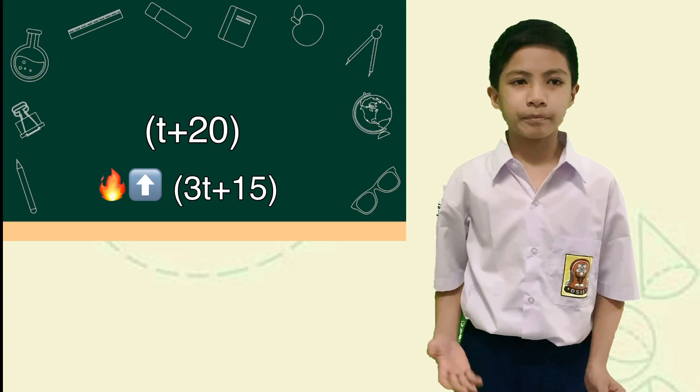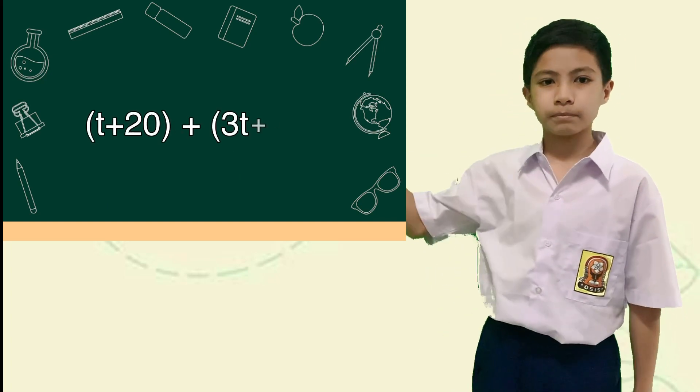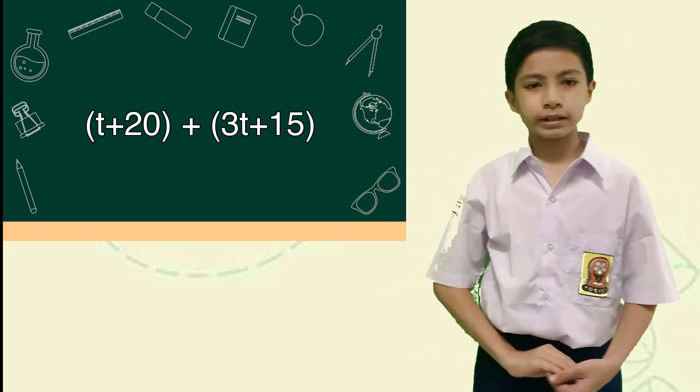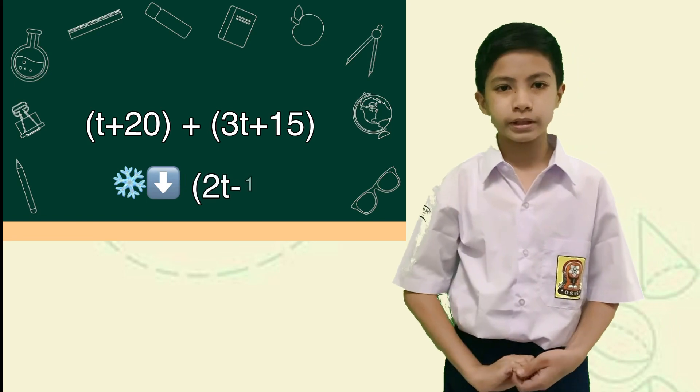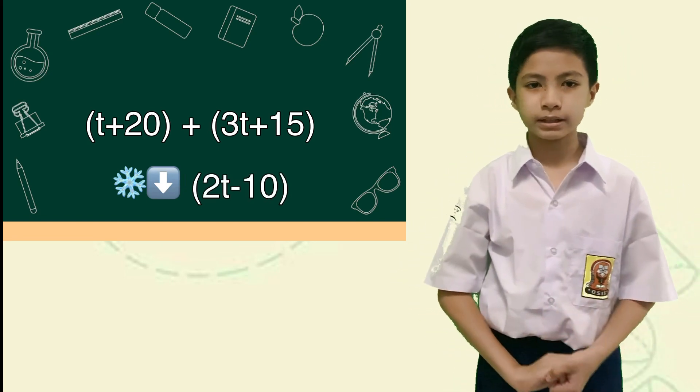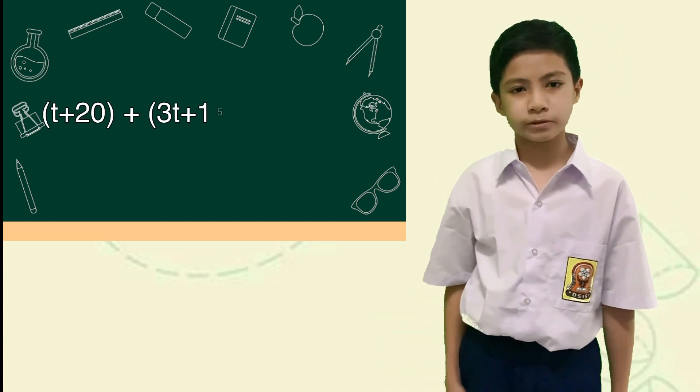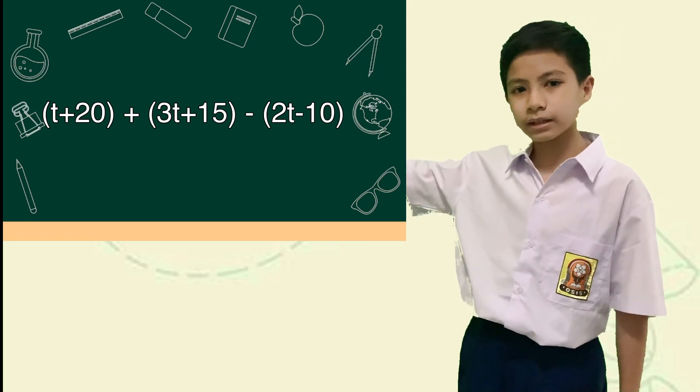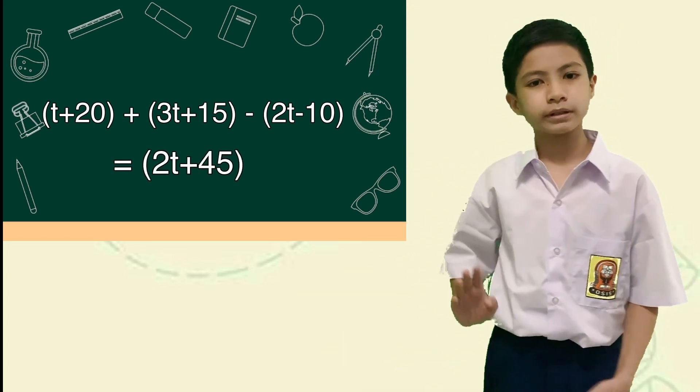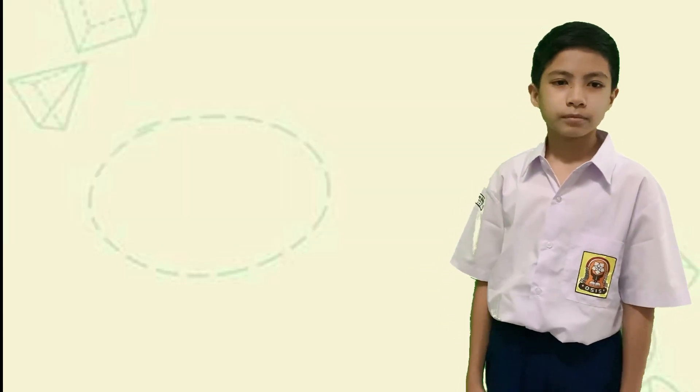Heat up means this temperature increase. So, we have to add 3T plus 15 degrees Celsius. And then, it's said that it's cooled down by 2T minus 10 degrees Celsius. Cooled down means the temperature decrease. So, we have to subtract 2T minus 10 degrees Celsius, which the final temperature is 2T plus 45 degrees Celsius.